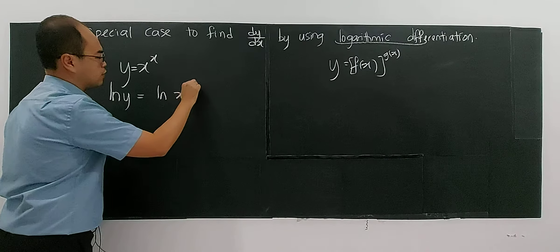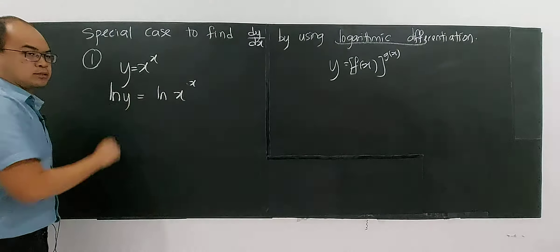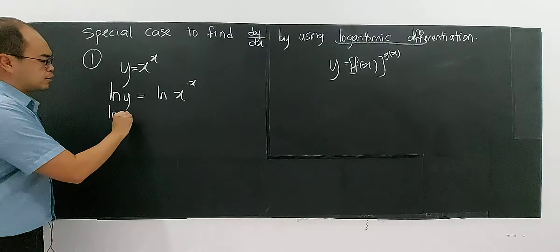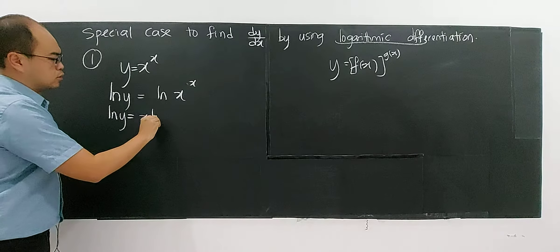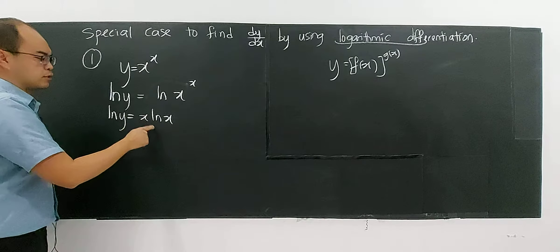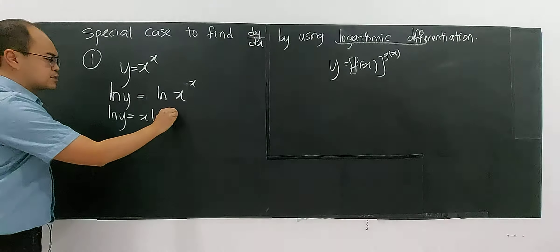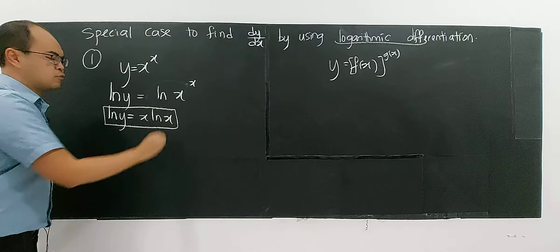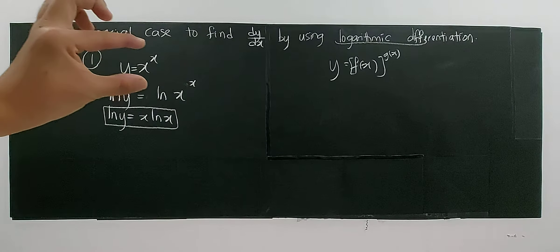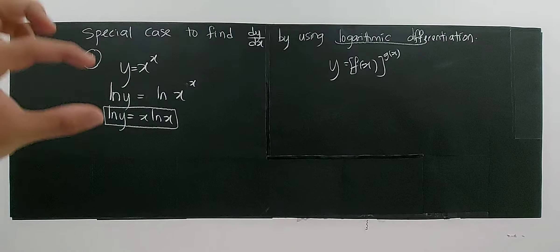A function to the power of another function. Usually you will have a function with a number as the power, or a number to the power of a function. But you never have a function to the power of a function. So for this type of case, where the power is a function and the base is also a function, we need to use logarithmic differentiation.